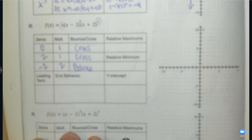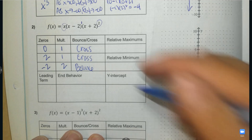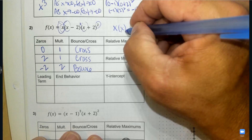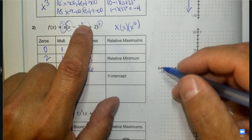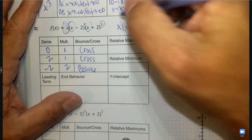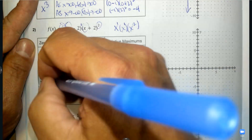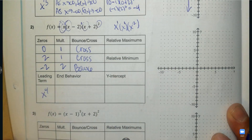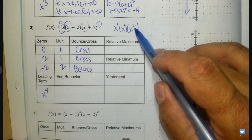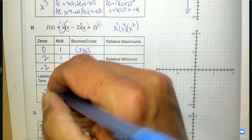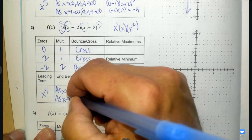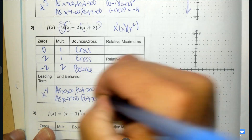The next thing is the power term. If I multiply this out — x times x times x squared — I add the exponents: 1 plus 1 plus 2, so the power term is x to the fourth. We know it's positive, so the right end goes up. We know it's even, so both ends go in the same direction — the left end also goes up.